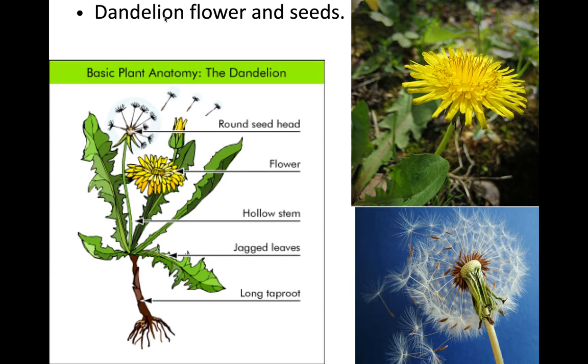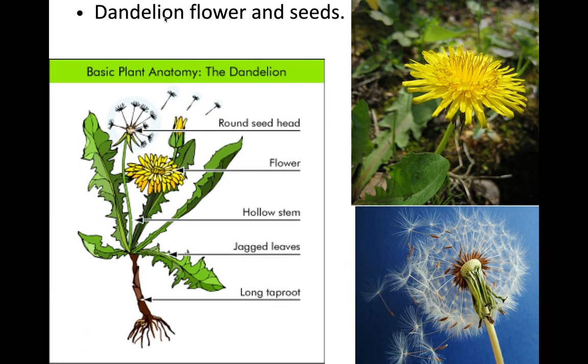Let's talk about the dandelion flower and the seeds. Take a look at the picture. Here we see the dandelion flower and the different components and parts: we have the round seed head, the flower, the hollow stem, the jagged leaves, and the long taproot that holds it down to the soil.